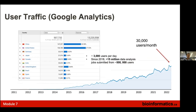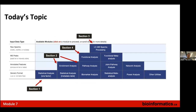MetaboAnalyst is working very well — last year we had close to three to five thousand users per day, many of them repeat users, with a lot of jobs analyzed, so it is well maintained. Today we'll use four modules: raw data processing, single-factor statistical analysis, functional analysis, and for sections three and four we'll use untargeted data. You'll have links via GitHub or Slack.